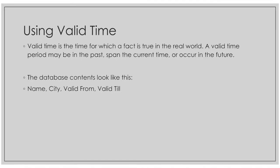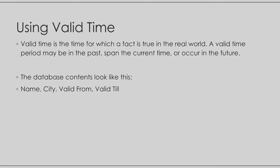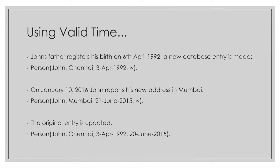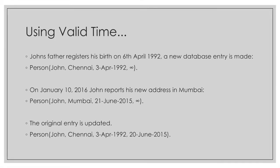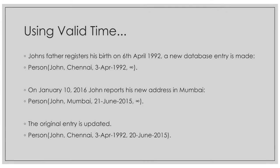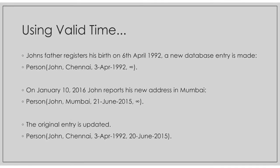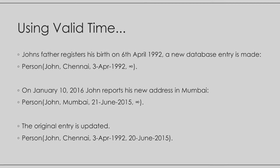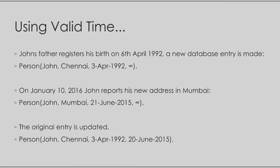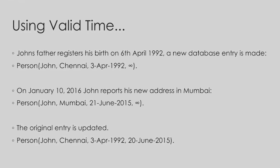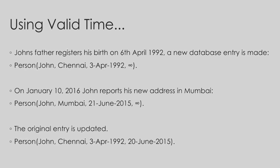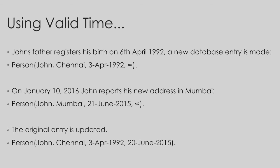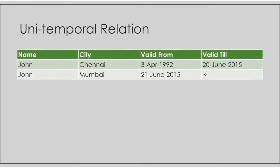To make this a temporal database, we will add the time aspect to the database. First, let's add the valid time, which is the time for which a fact is true in the real world. In this example, John was born on 3rd April 1992. Even though his father registered his birth three days later, the valid time entry would be 3rd April 1992. There are two entries for the valid time: the valid start time and the valid end time. So 3rd April 1992 is the valid start time, and since we do not know the end time, we add it as infinity. Similarly, John changes his address to Mumbai on 10th January 2016, but he has been living in Mumbai from 21st June of the previous year, so his valid time entry would be 21st June 2015. The table will look something like this with two additional entries.